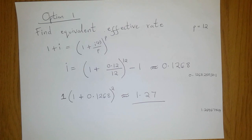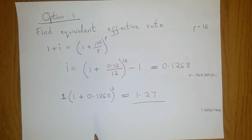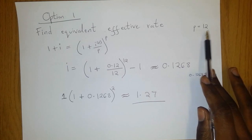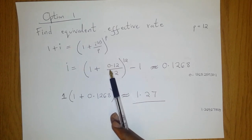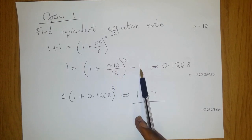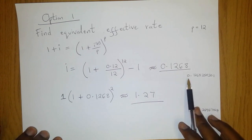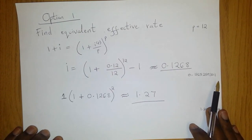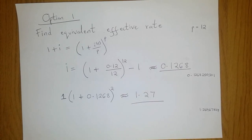Under Option 1, we find the equivalent effective rate of interest. The formula is: i = (1 + I^(p)/p)^p − 1, where i is the equivalent effective rate of interest per year. Our p is 12, since this nominal rate pays out every month and there are 12 months in a year. Plugging in values — 0.12 divided by 12, raised to the power of 12, minus 1 — we get that our equivalent effective rate of interest for a period of one year is approximately 12.68%.